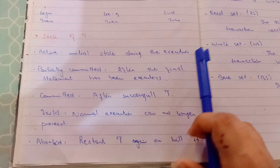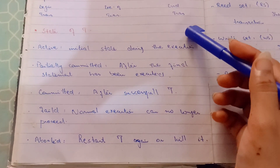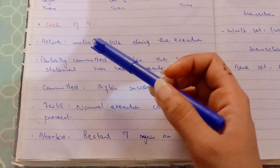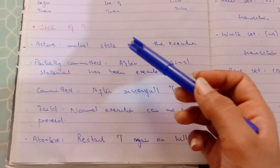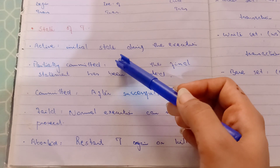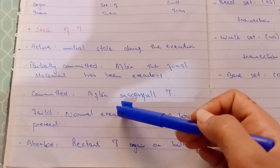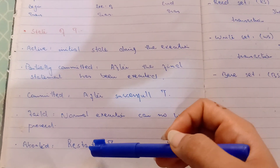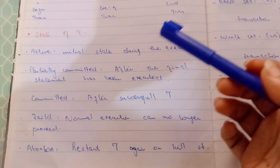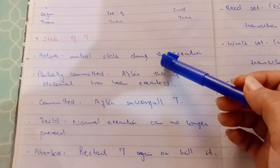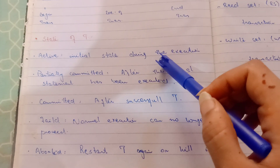If we talk about the different states of a transaction, we have different states: Active state, Partially Committed, Committed, Failed, and Aborted.